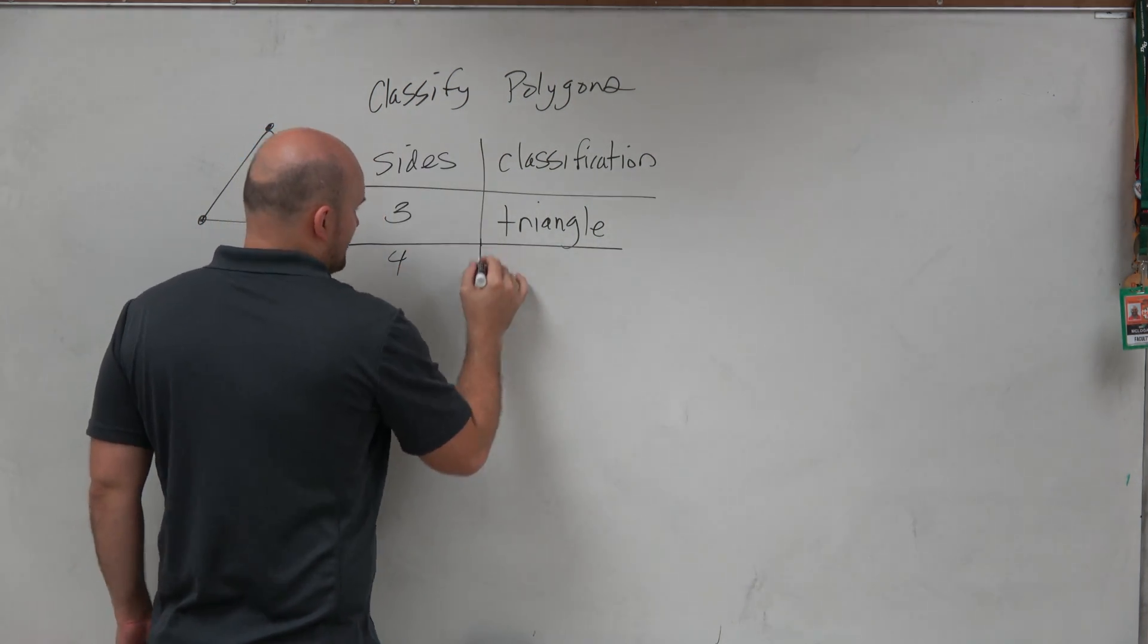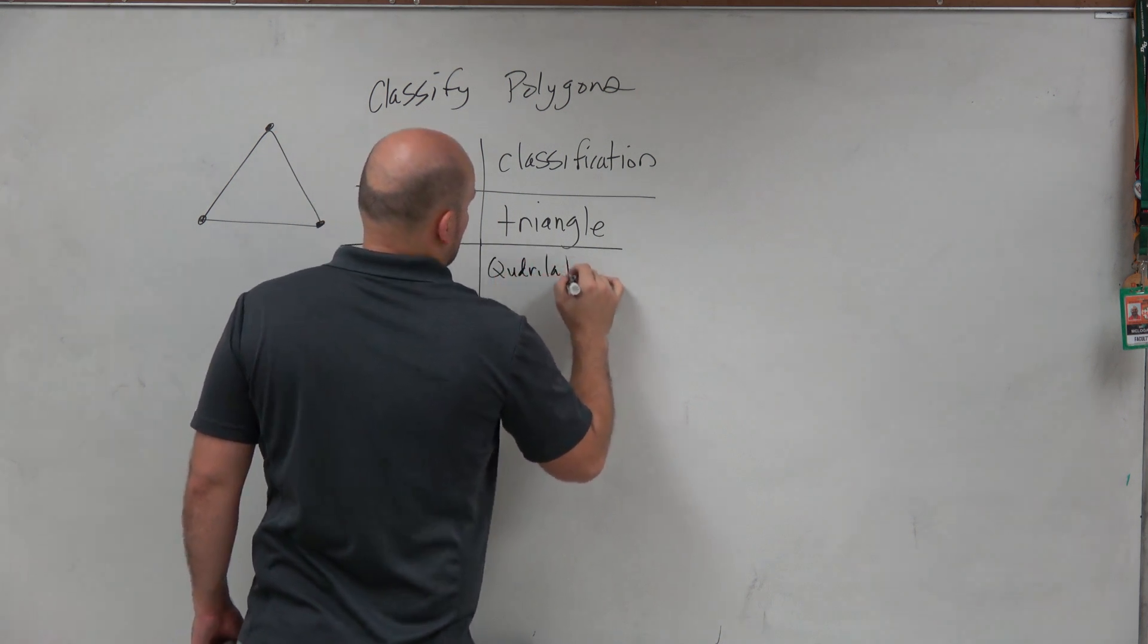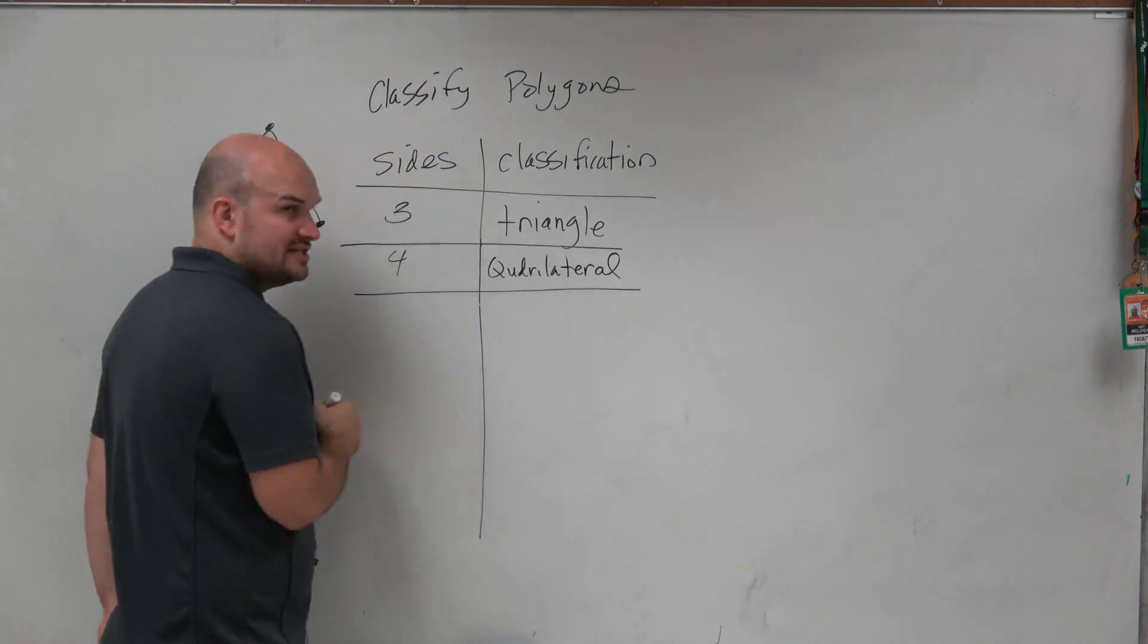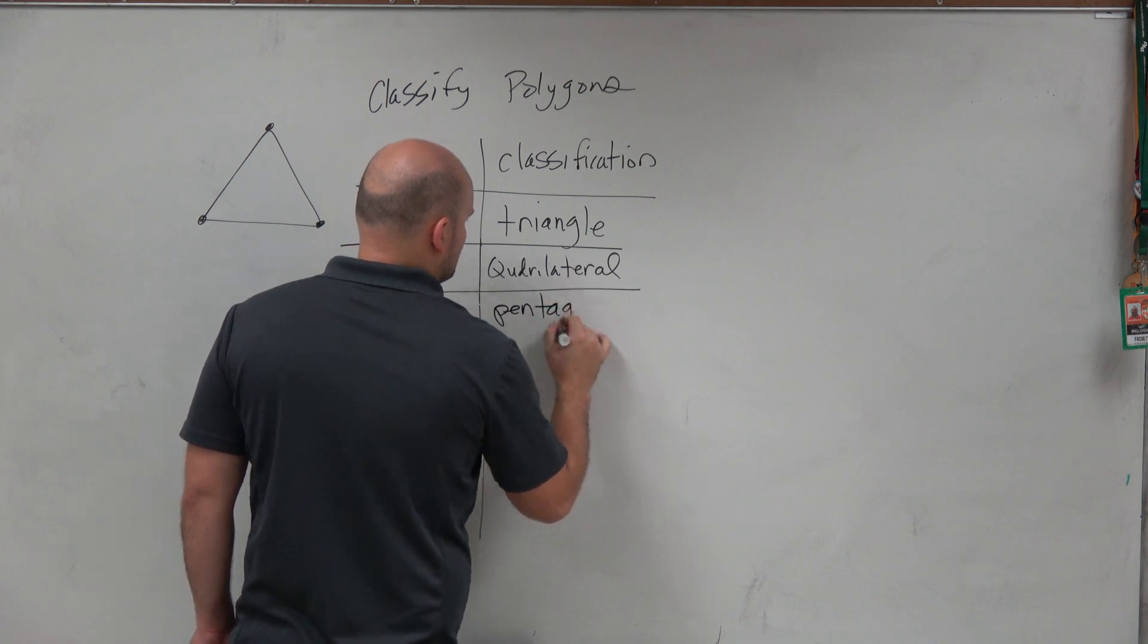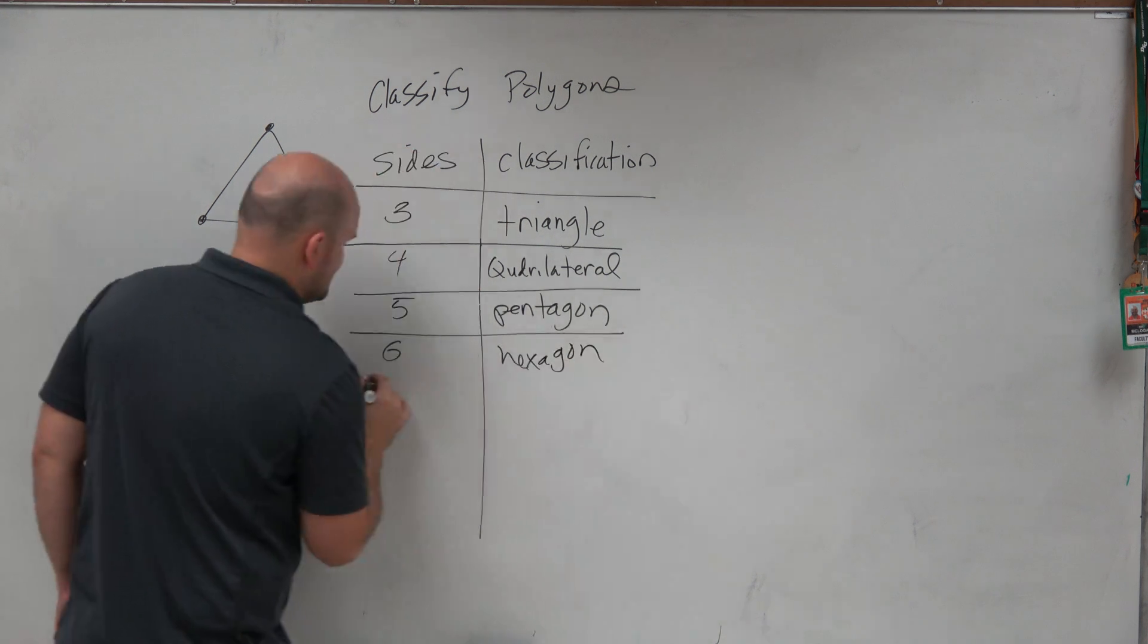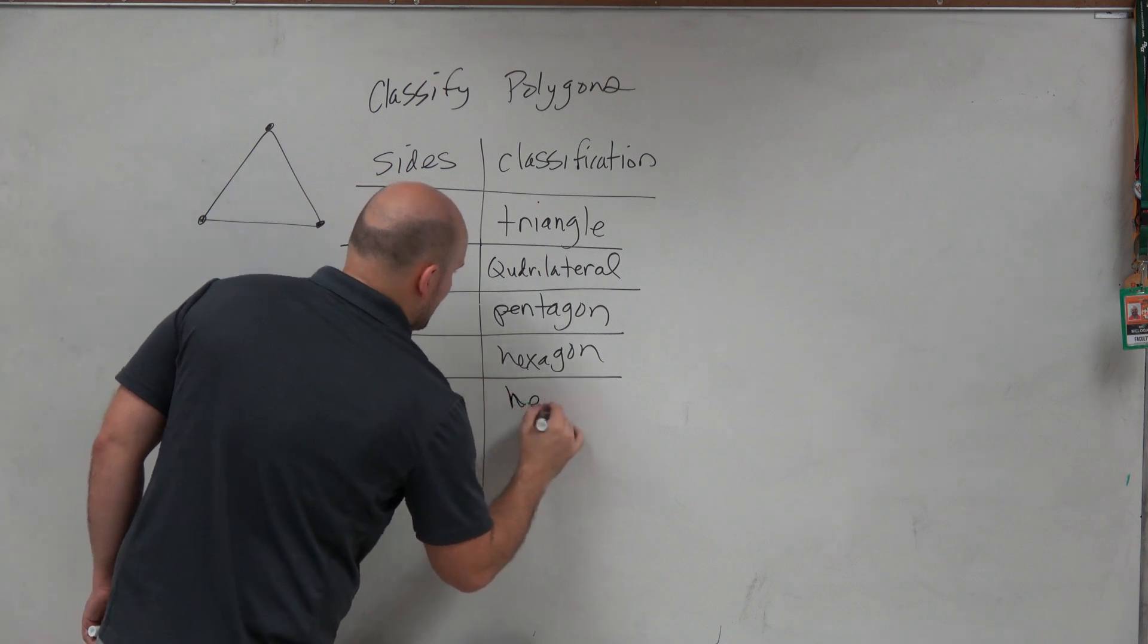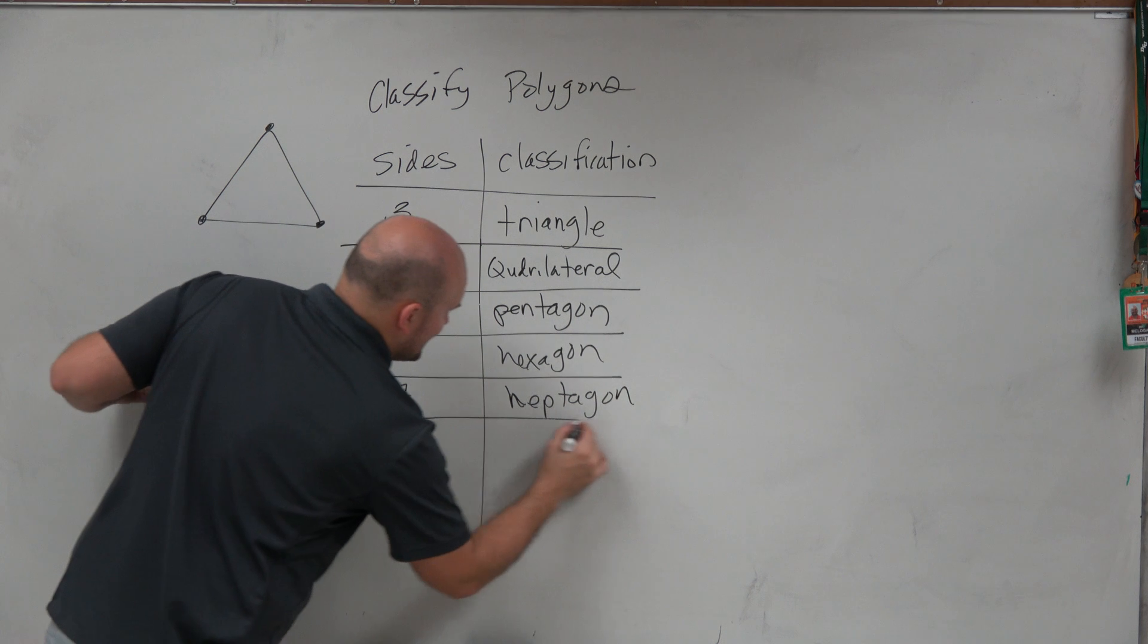Four sides is going to be a quadrilateral. We'll spend a whole unit discussing more on quadrilaterals. Five is going to be a pentagon. Six is going to be a hexagon. Seven is going to be a heptagon. And then eight is going to be an octagon.